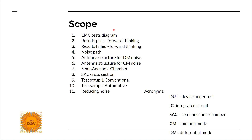Scope. First we will see the EMC test diagram — where to find our radiated emission test standard in the EMC tree. Then we will see two graphs of results, so forward thinking: before we know how to do this test and how emission is radiating from our device, we will see two graphs — one with results that are passing the limits and one with results that are failing the limits.